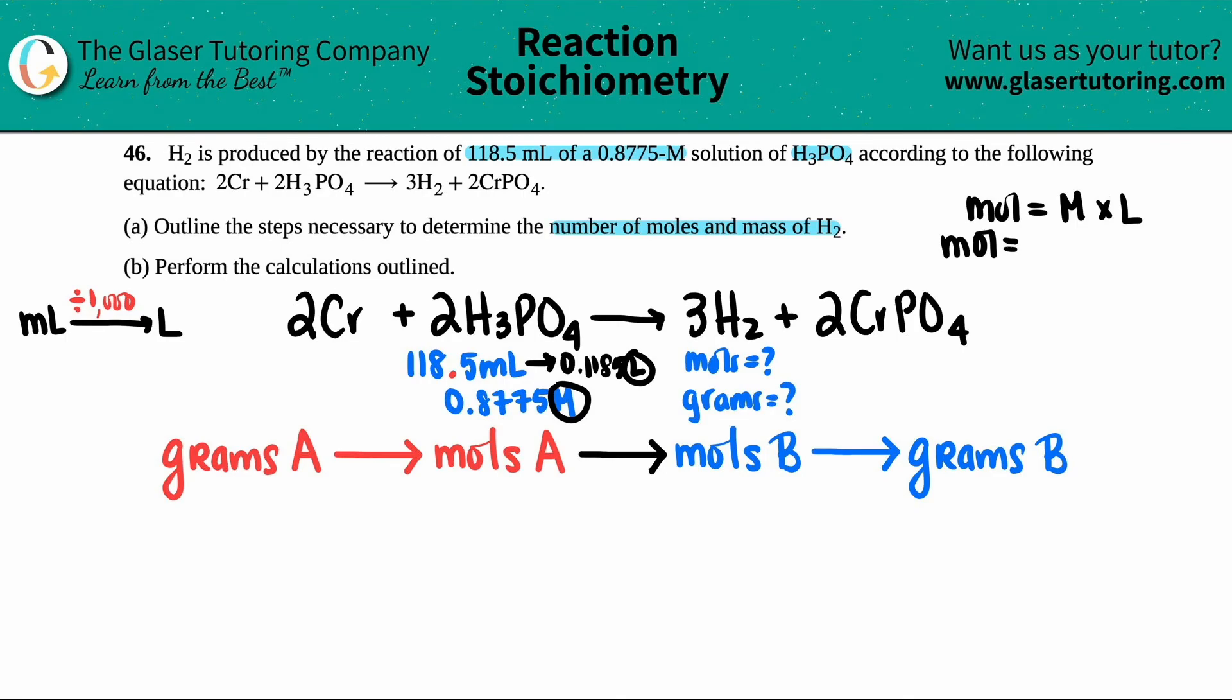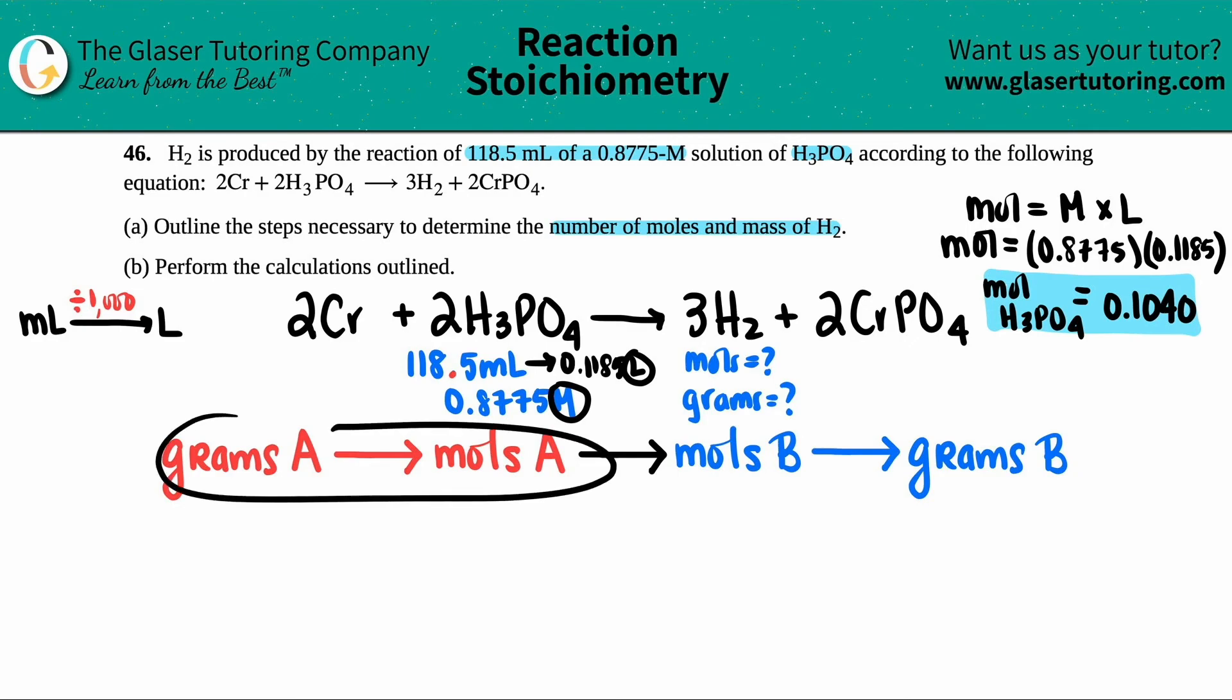Mole equals, the molarity was 0.8775. And then the liters was 0.1185. So the mole, and this is of H3PO4 equals, let's multiply those two together, 0.8775 times 0.1185, four sig figs all around. So 0.1040. Now we now are starting where? We bypassed this step. We already have the moles of this, which is beautiful because I can just say bye-bye to the step. That's what I mean by you can cater it to the specific problems that you have.